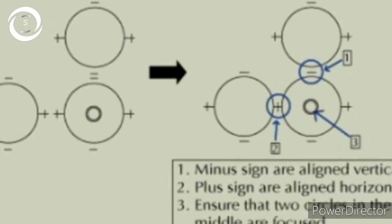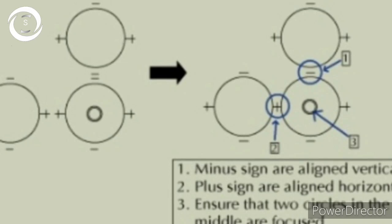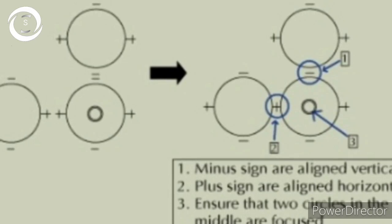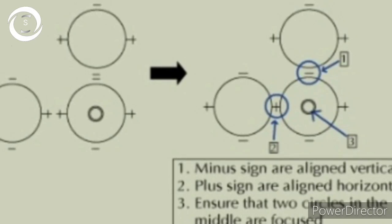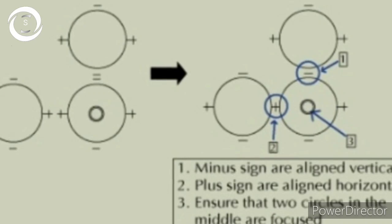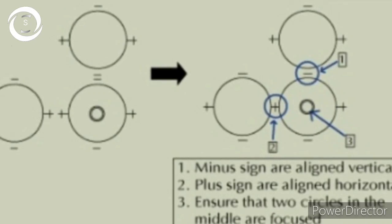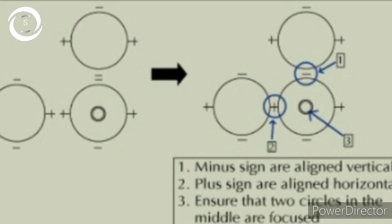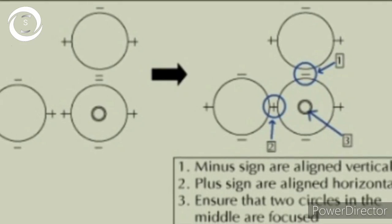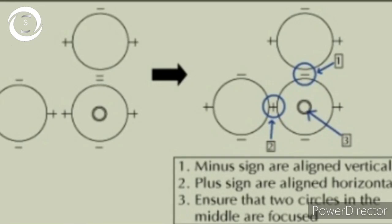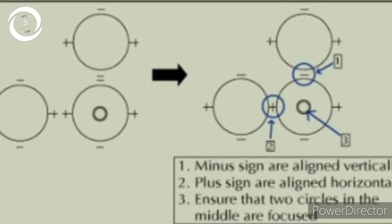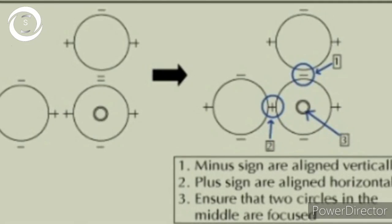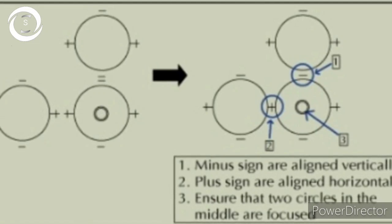You should align the minus of the central image with the minus of the superior image. The plus sign is aligned horizontally with the plus sign of the central image and the plus sign of the horizontal mire. Ensure the two circles in the middle are focused properly as well, so you will get the correct reading of both meridians.